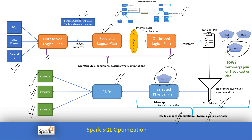To summarize: the logical plan talks about the 'what' part, and the physical plan talks about the 'how' part. The unresolved plan is where table structure, table name, and column names are unknown. The analyzer uses the Hive metastore to resolve tables and columns. Rules are then applied in the optimized logical plan to ensure minimum data is used in memory, making Spark perform fast. Finally, the optimized logical plan is transformed into a physical plan, the best plan is selected, and it is executed at the low level. I hope this helps you understand logical and physical plans.